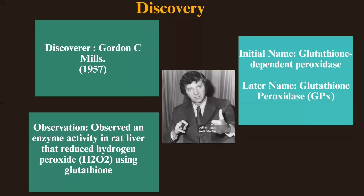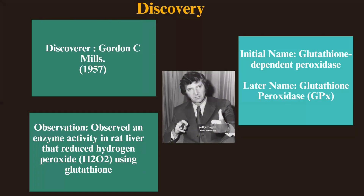Discovery of glutathione peroxidase: glutathione peroxidase was discovered by Gordon C. Mills in 1957. He found enzyme activity in red blood cells and liver that reduces hydrogen peroxide using glutathione. The enzyme was initially named glutathione-dependent peroxidase, and later renamed glutathione peroxidase.